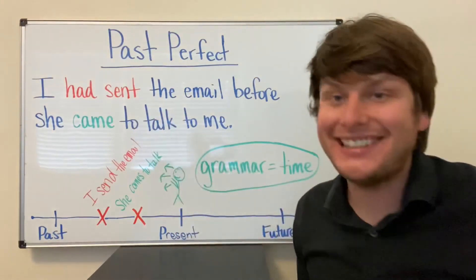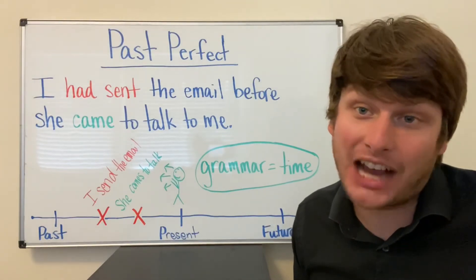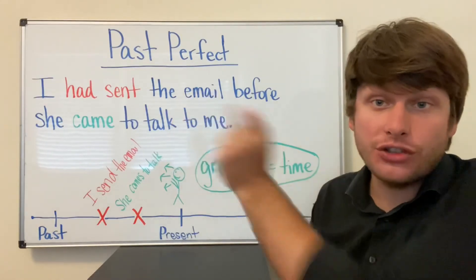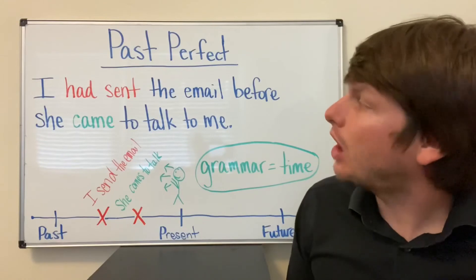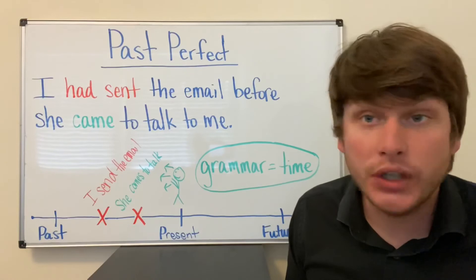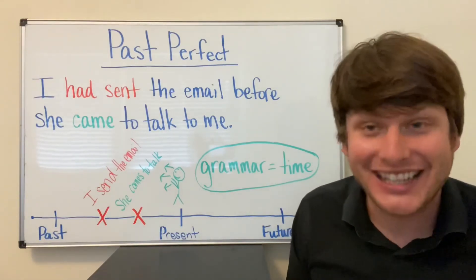When I see the Past Perfect Grammar, I know this action occurred first. First, I could change the order of the sentences. She came to talk to me before I had sent the email, and it would not change the meaning or the sequence of events.